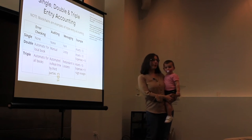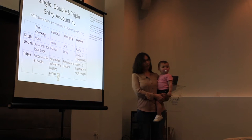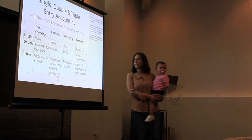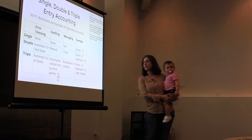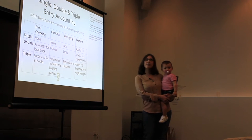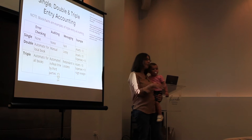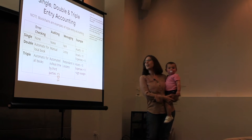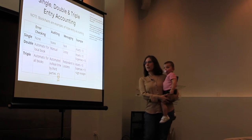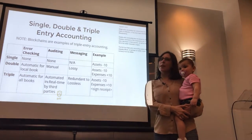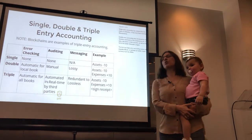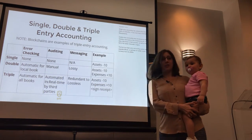Now, moving forward a few centuries, we are here today. Very recently — a couple of decades ago, some would argue a decade ago — we started introducing Triple Ledger Accounting. What this basically means is that besides debits and credits, we also added signed receipts.